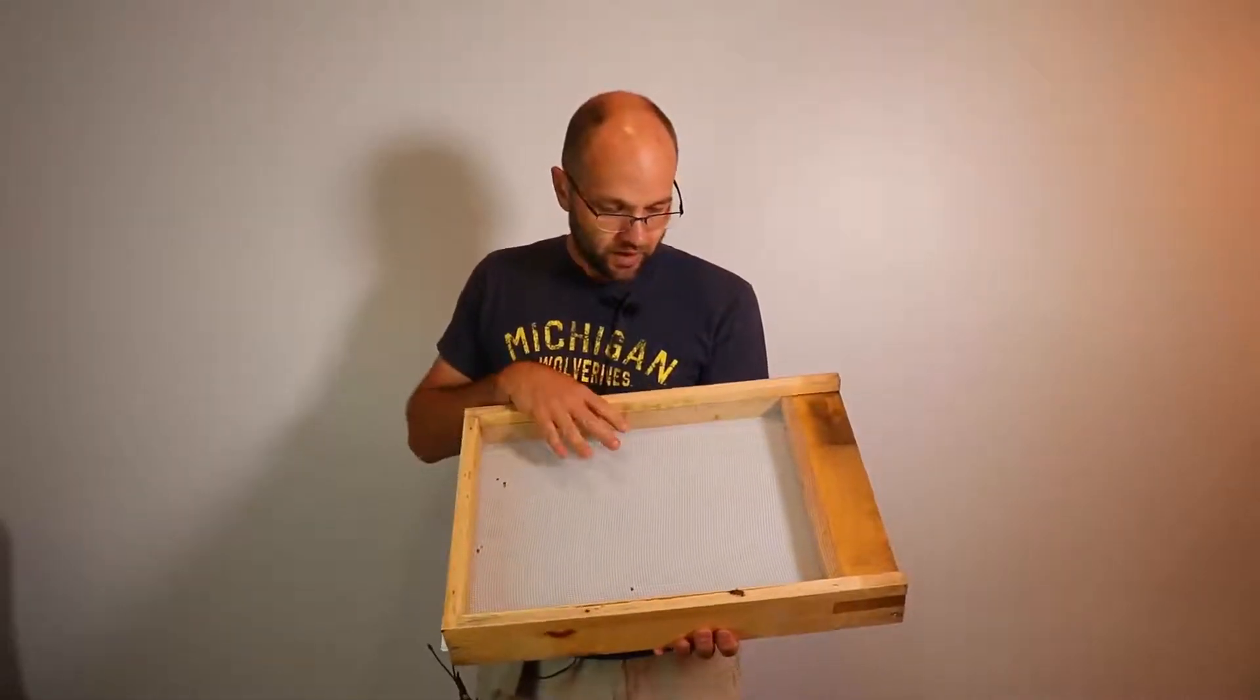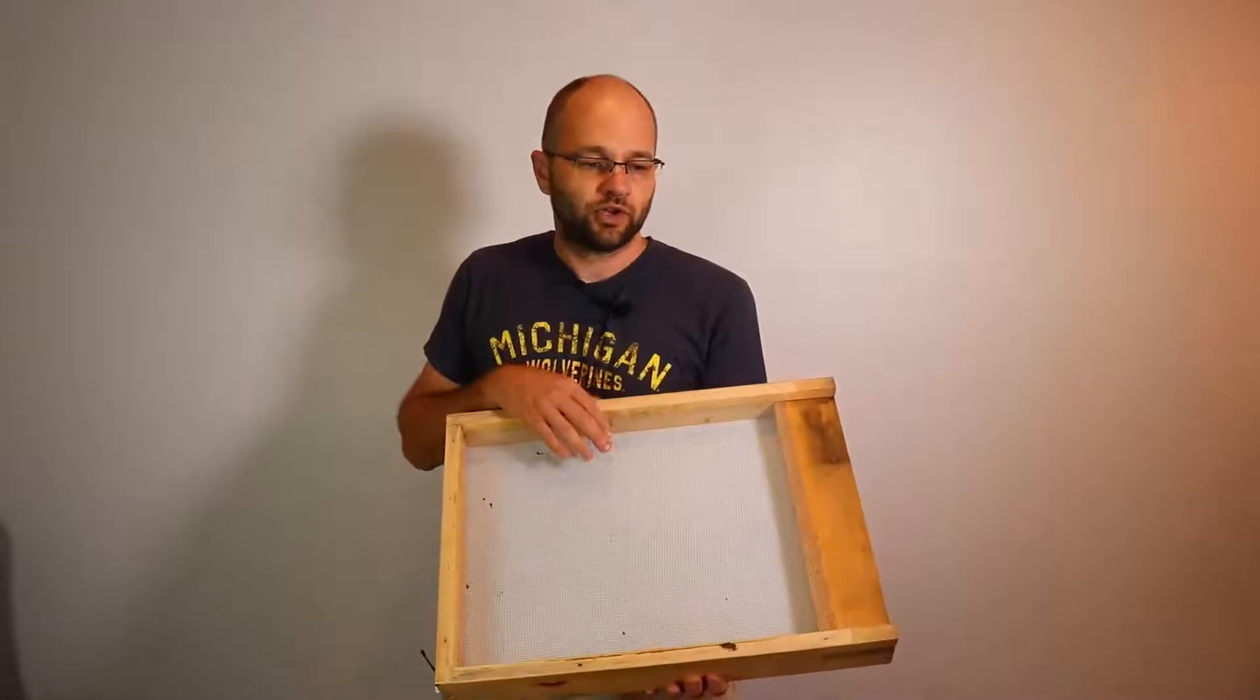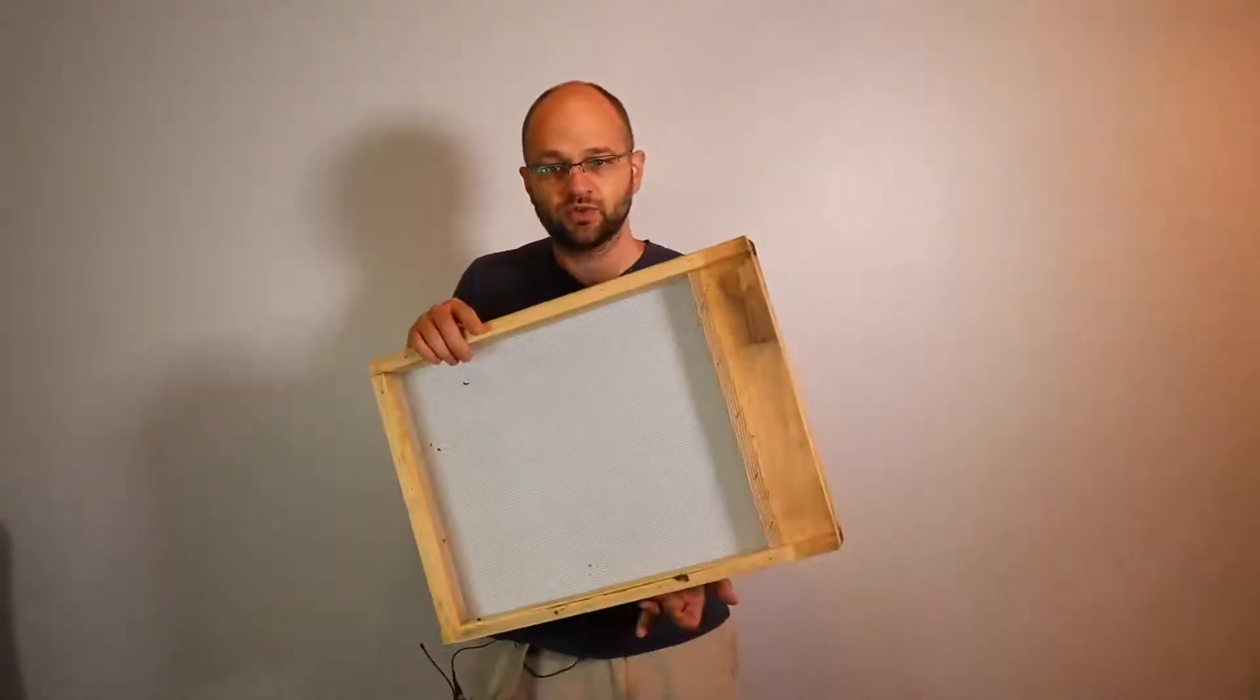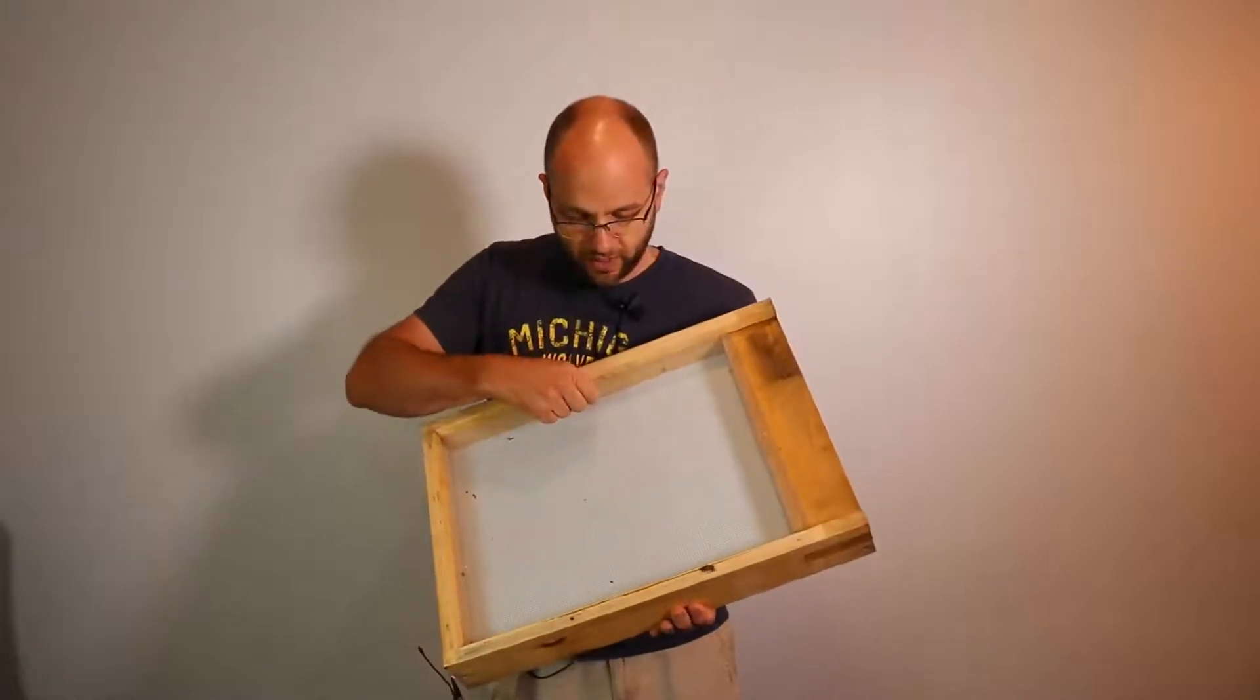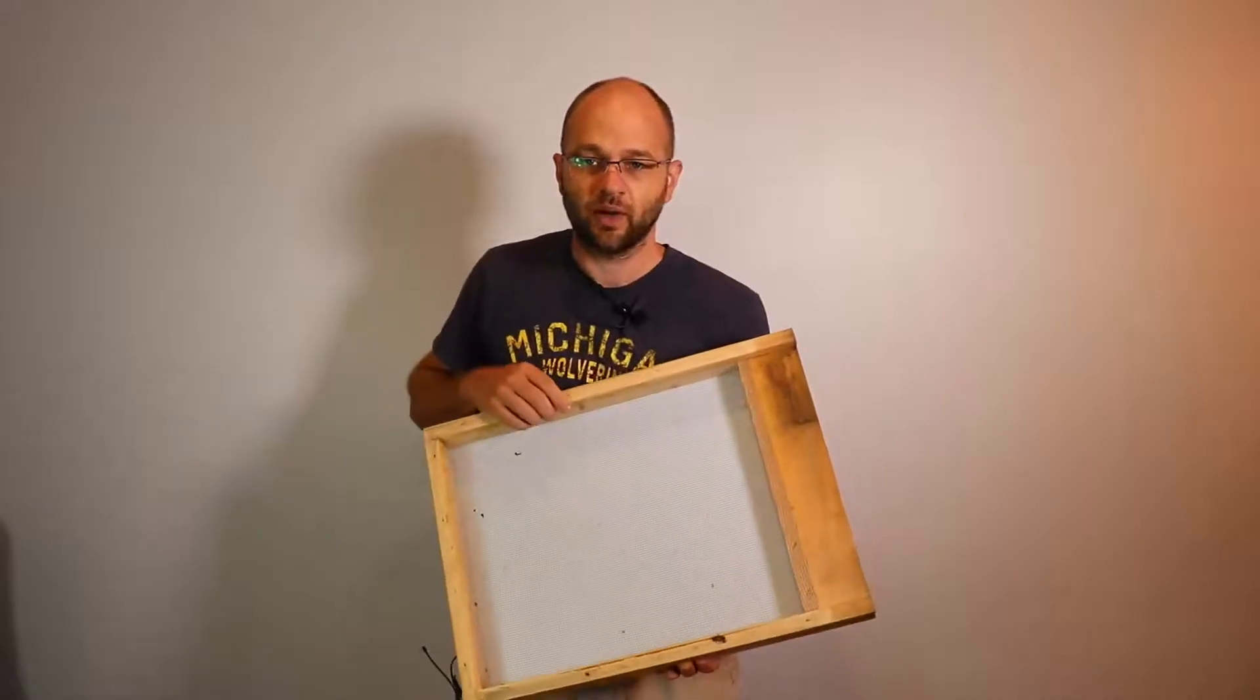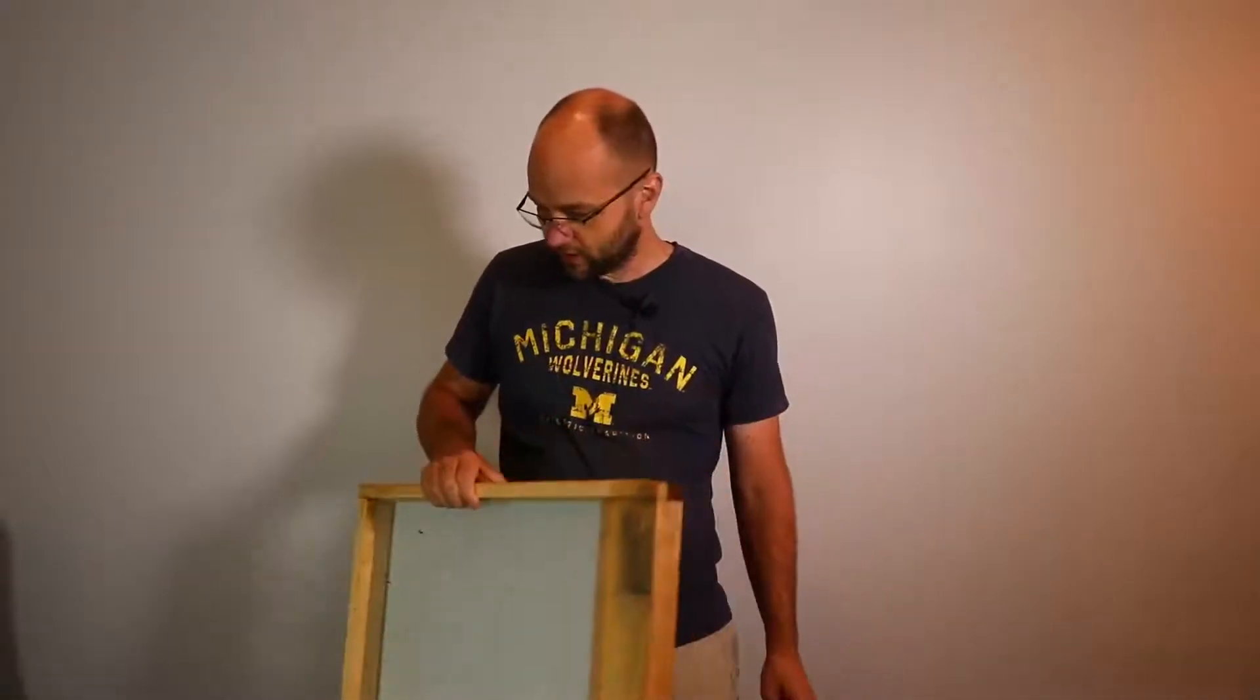Now, another thing that can happen is if you have grass underneath the hive or plants, and this is pretty low to the ground, sometimes those plants will grow up between the screen and the plants will start growing up into the hive. That is an additional drawback. I think that's about it.